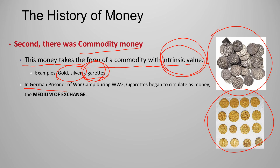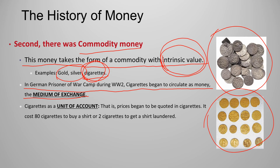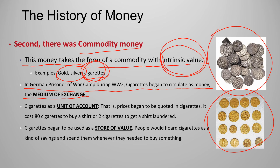Cigarettes are also an interesting case of commodity money. In a German prisoner-of-war camp during World War Two, cigarettes began to circulate as money. They were used as a medium of exchange. They were also used as a unit of account — prices began to be quoted in cigarettes, for example 80 cigarettes to buy a shirt or two cigarettes to get a shirt laundered. Cigarettes also began to be used as a store of value, satisfying all three functions of money.